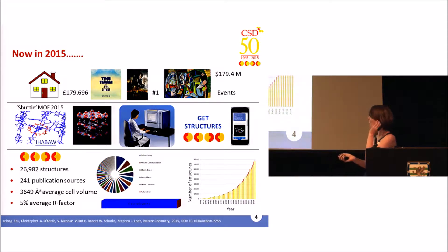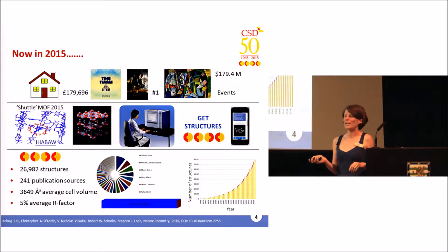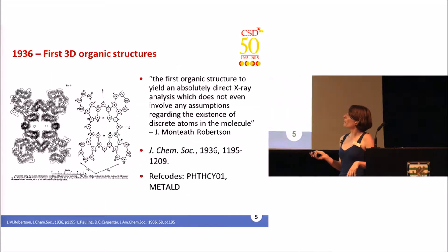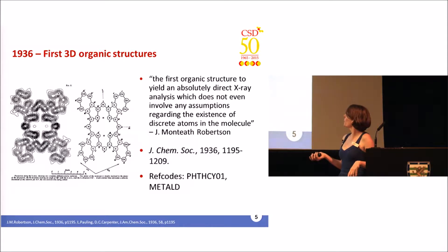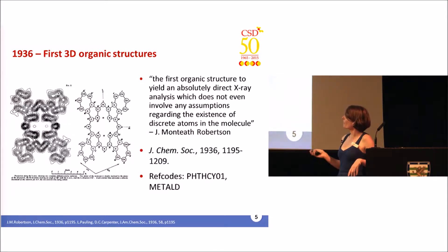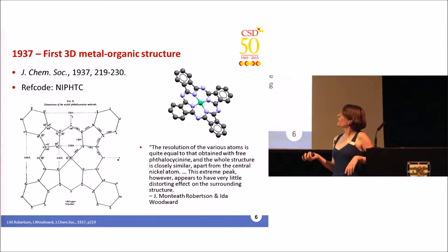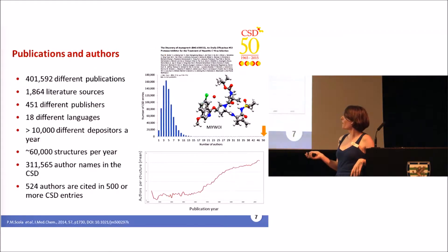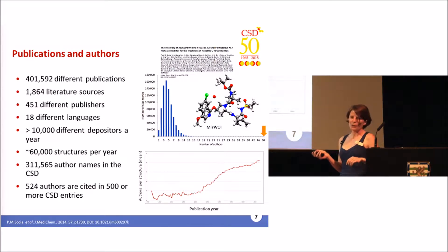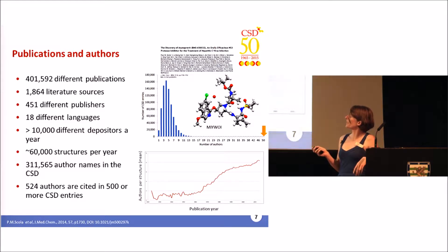You can see the near-exponential growth rate of the CSD over the years. So that's 1965 and 2015 — but what's happened in between? We jump back to 1936, which saw one of the first structures published with 3D coordinates, by Robertson, and also a structure by Linus Pauling. Just one year later in 1937, Robertson published the first metal-organic structure with coordinates. Nearly 80 years after that, we now have over three quarters of a million structures from hundreds of thousands of different publications and hundreds of different publishers.